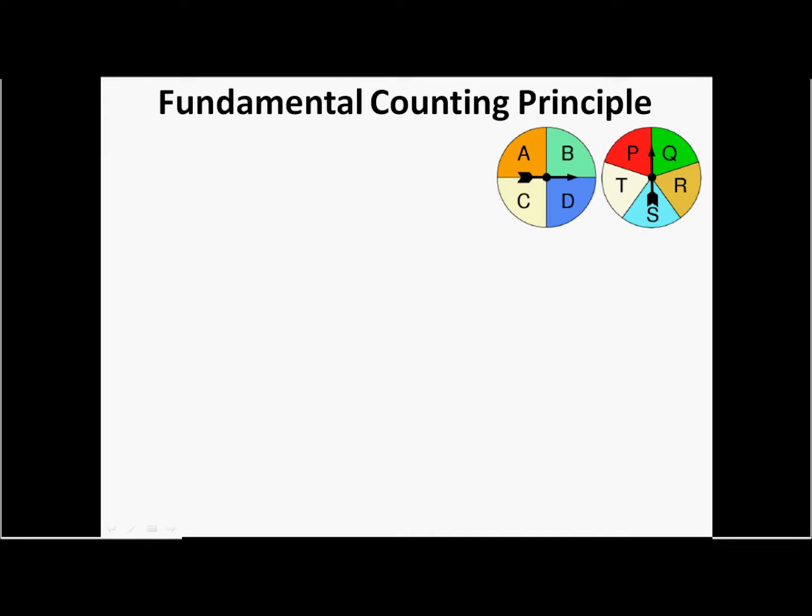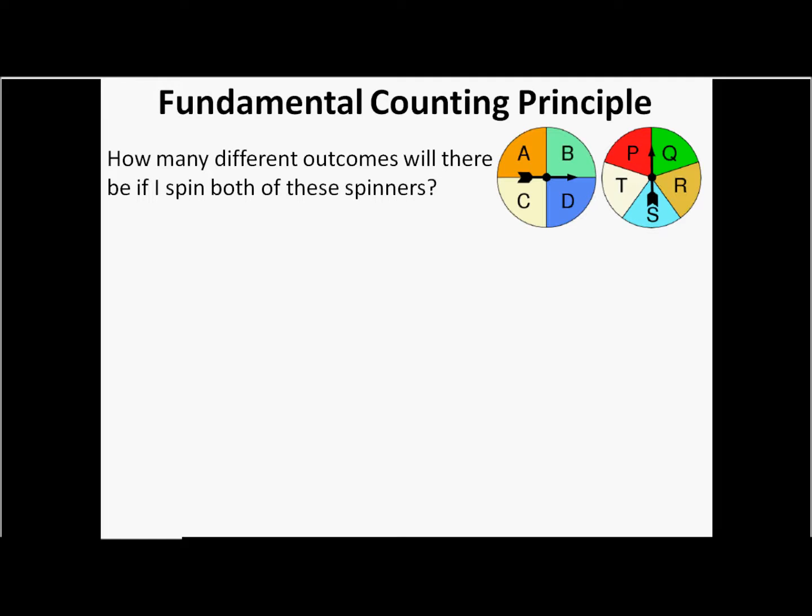This is covering the fundamental counting principle. We want to know how many different outcomes will there be if I spin both of these spinners. We have this spinner labeled ABCD. So on that first spinner, your different outcomes would be ABCD.